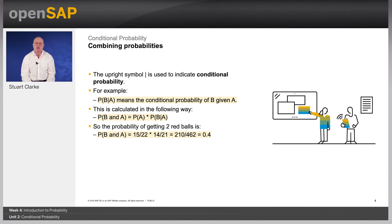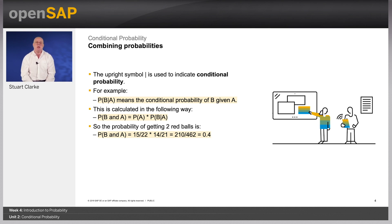So the probability of getting two red balls, that is A and B, is as follows. P(B and A) equals 15 divided by 22 multiplied by 14 divided by 21. That comes to 210 divided by 462, which equates to 0.46, 46%. Pause the video here and try calculating the conditional probability of getting a red, a pink, and a black.